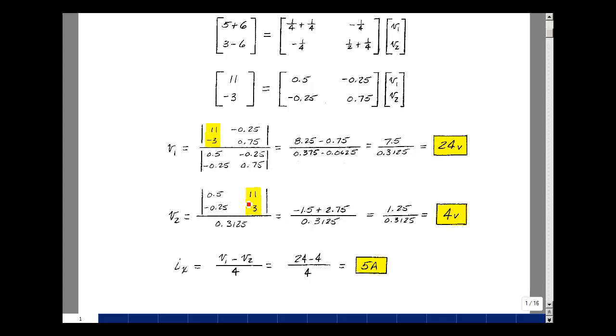The denominator is the same, so you just grab that value of 0.3125. And that ratio turns out to be 4 volts. So the current I sub x that we're trying to solve for is V1 minus V2 over 4, and that would be 24 minus 4 over 4, or 5 amps. And this is supplemental problem 3.1.